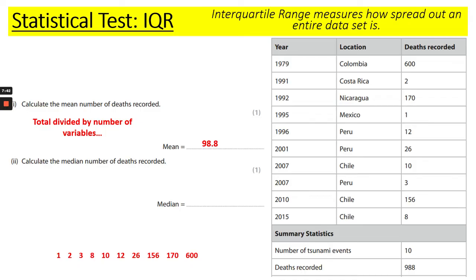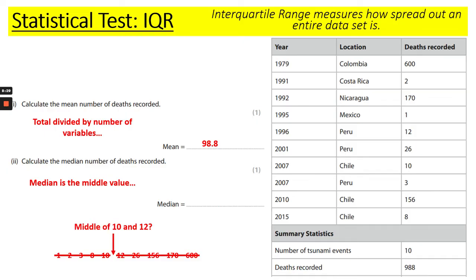Next, calculate the median number of deaths recorded. Median means middle. What you have to do is order the numbers from lowest to highest: 1, 2, 3, 8, 10, 12, 26, 156, 170, 600. To get the median, work from each end and cancel each out until you get to the middle. There is no single middle value because each side has 5. So you find the middle of where you stopped — between 10 and 12. The middle of 10 and 12 is 11, so 11 is your median.